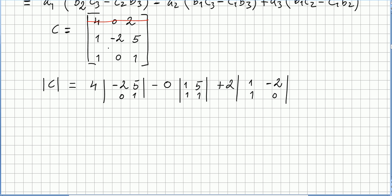So 4. So I have 4 here. So minus 2, 5, 0, 1 here. This will be 0. So 0 here. So we have 1, 1, 5, 1. And then we have this one. So that will be 1, minus 2, 1, 0. Now 0 times this determinant. This will be 0. So we don't have to calculate this.